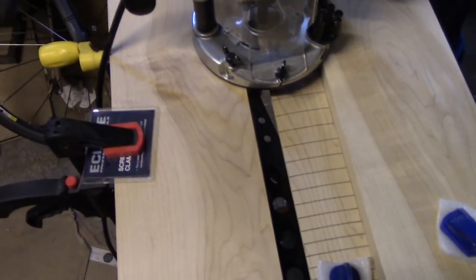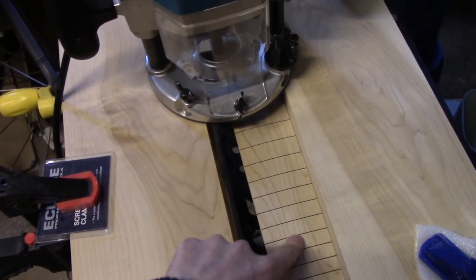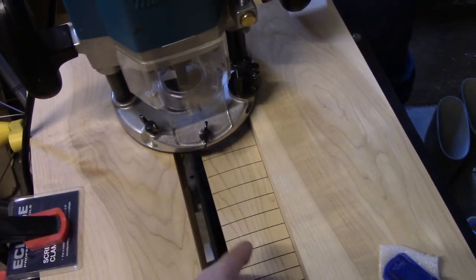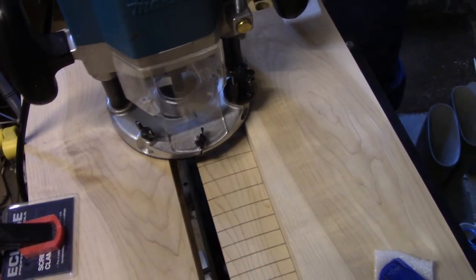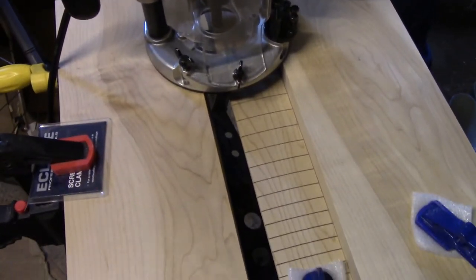This is my rig to trim the fretboard down to the template. The template's mounted underneath the fretboard here. I've got a bearing cutter that will run along the template underneath, and I've got the maple either side for the router to run on. That should give a nice clean cut.